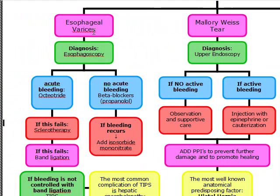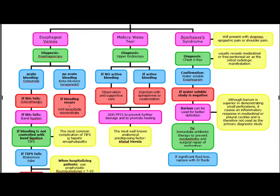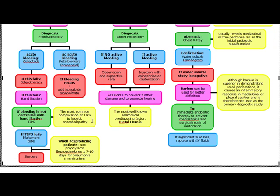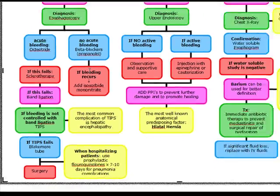Quick review — esophageal varices: if life-threatening, fluid replace with two large-bore IV needles, then give octreotide. For diagnosis: esophagoscopy. If octreotide fails: sclerotherapy → band ligation → TIPS (complication: hepatic encephalopathy) → Blakemore tube. Give prophylactic fluoroquinolones for 7 to 10 days. If no acute bleeding: propranolol; if bleeding recurs on propranolol, add isosorbide mononitrate.